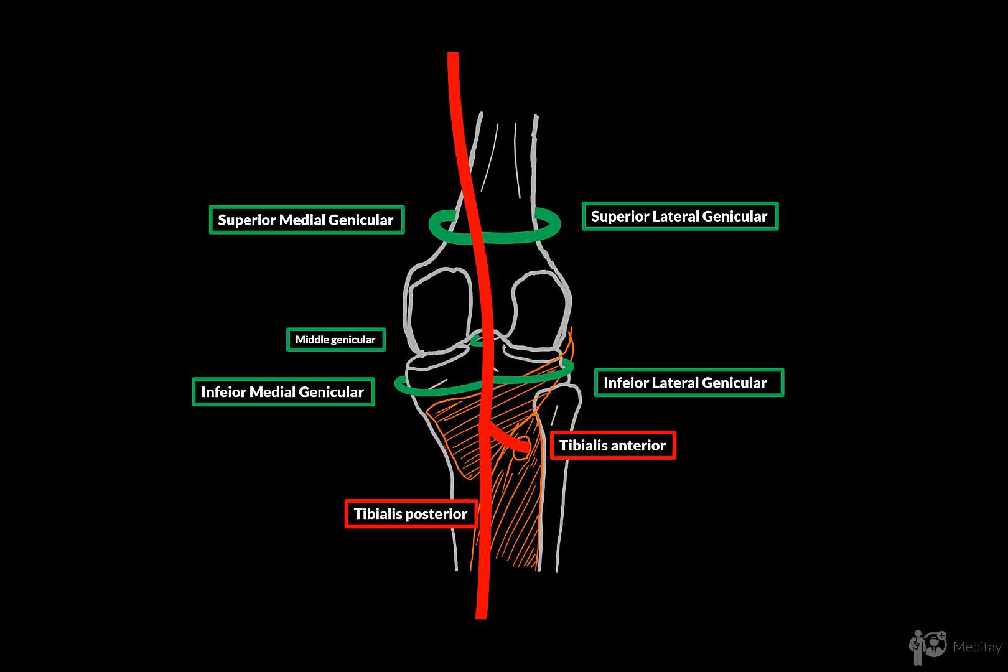It pierces the articular capsule, enters the articular cavity, and supplies the ligaments, menisci, and the synovial folds of the knee. The last artery the popliteal artery gives off are the sural arteries, which descend and supply the triceps surae muscle.